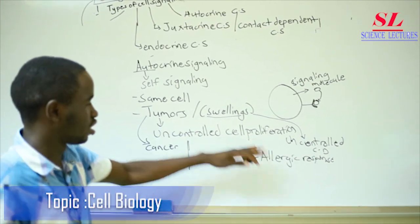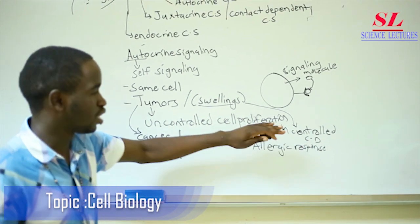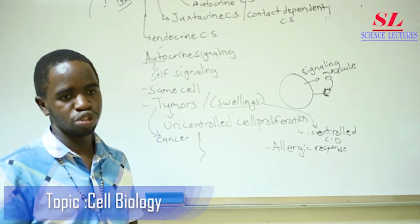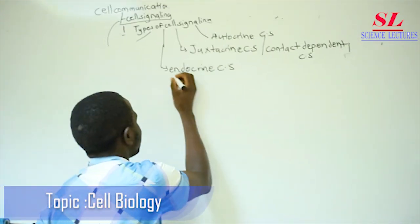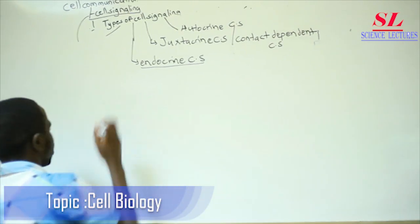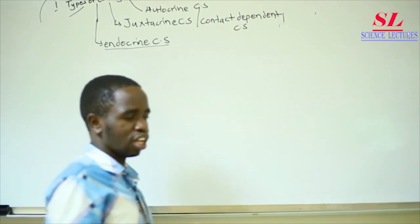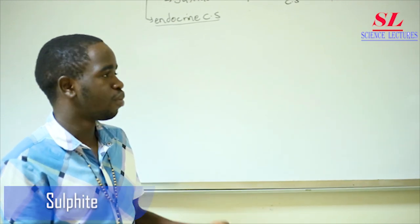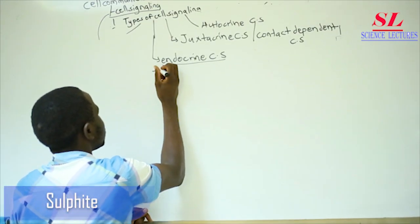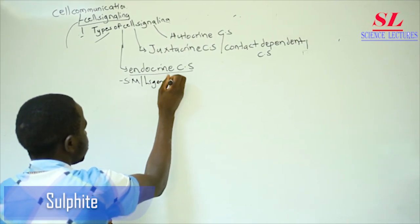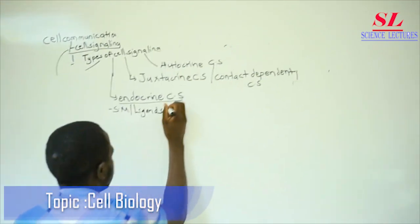So one thing to note: not all swellings are uncontrolled. Sometimes it can be controlled in order to respond to various stimuli. Next is endocrine cell signalling. We first discussed paracrine cell signalling, where a signaling molecule is released and causes changes within cells of close proximity. However, sometimes the signaling molecules have to travel for long distances.